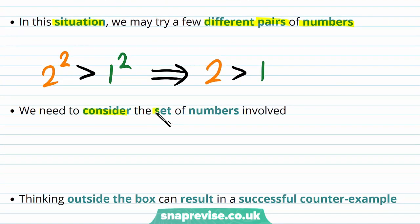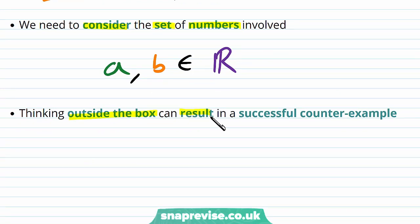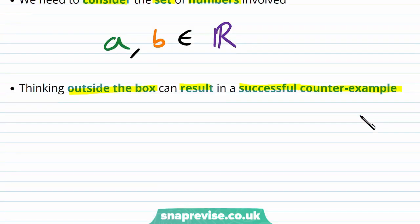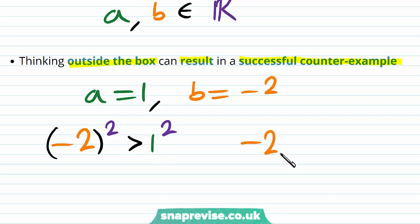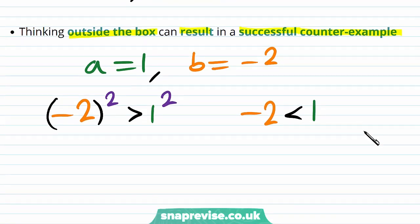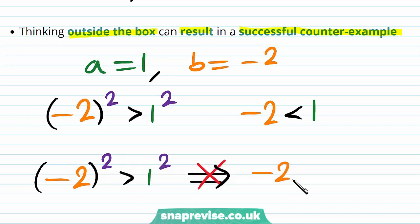But we need to consider the set of numbers involved. We have been given that a and b are real numbers. Thinking outside the box can result in a successful counterexample. Let's say we have a equal to 1 and b equal to minus 2. We have that minus 2 all squared is strictly greater than 1 squared, but minus 2 is strictly less than 1.